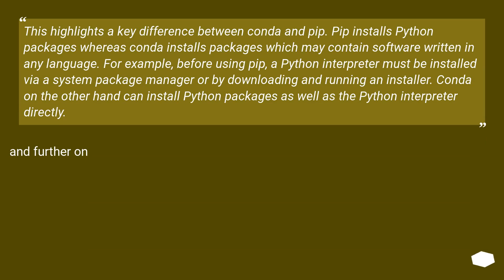This highlights a key difference between conda and pip. Pip installs Python packages whereas conda installs packages which may contain software written in any language. For example, before using pip, a Python interpreter must be installed via a system package manager or by downloading and running an installer. Conda, on the other hand, can install Python packages as well as the Python interpreter directly.